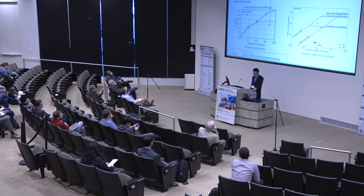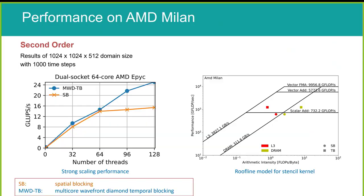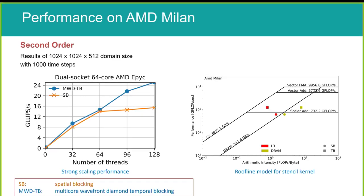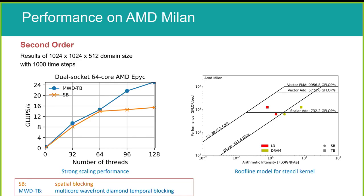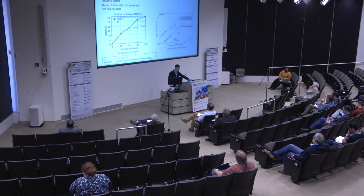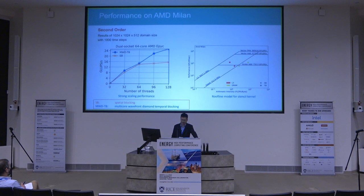We evaluate the AMD Milan processor using the same performance metrics with the second order formulation. Due to the particularity of the chip, the last level cache is shared among CCDs, so we use eight cores as the thread group size for computing diamonds, improving concurrency. The performance of MWTB is remarkably higher than spatial blocking. The AMD Milan chip has over 256 megabytes of LLC, which is largely in favor of the MWTB implementation. We achieve over 25 giga stencils per second on our test case. The roofline model shows the same behavior as on Intel, where DRAM arithmetic intensity is much higher for temporal blocking.